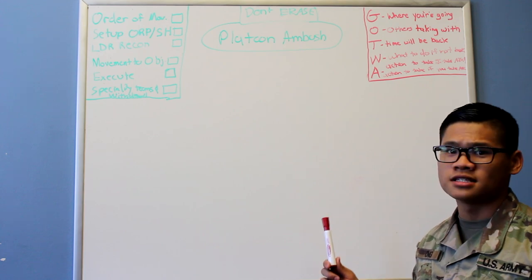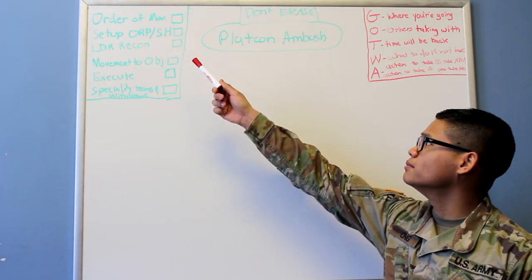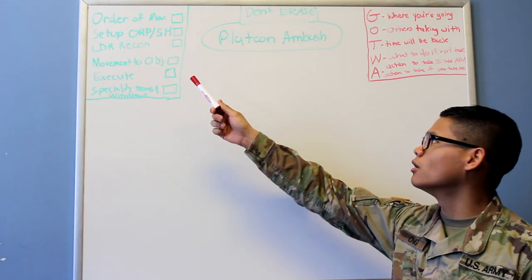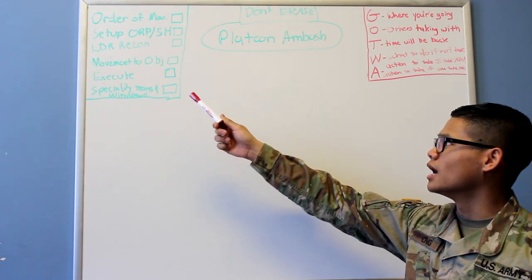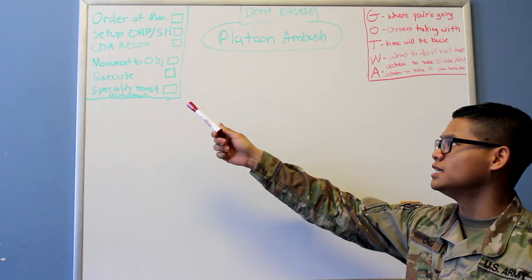We'll be doing so in six steps: order of movement, set up ORP's security halt, leaders recon, movement to the objective, execute, and specialty teams and withdrawal.